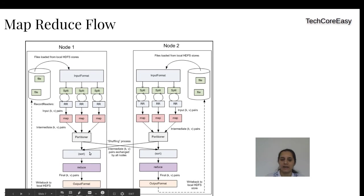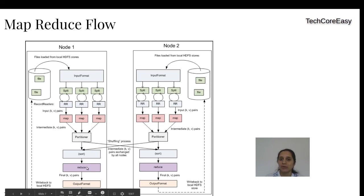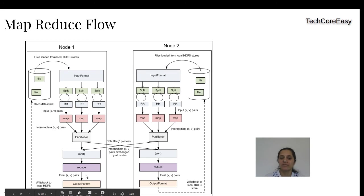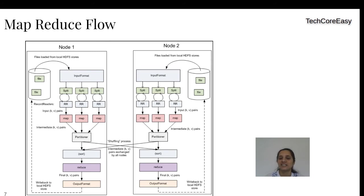Before giving data as input to the reducer, the sort phase sorts the data, because the reducer always receives sorted data. A single reducer has all data belonging to a single key. The reducer then performs the reducing operation and stores the data in the given output directory. The output is written in part files — if you have two reducers, you have two part files. There is also a success file of 0 bytes; whenever this is present, you can assume the MapReduce job is completed.